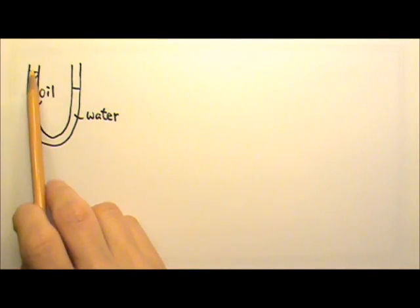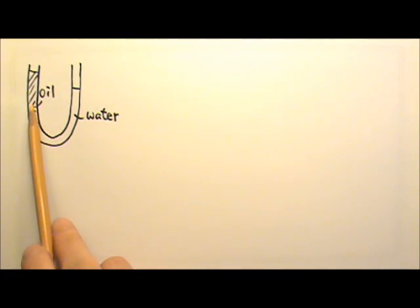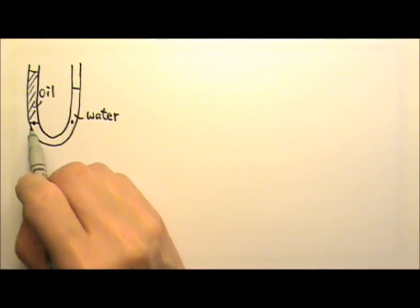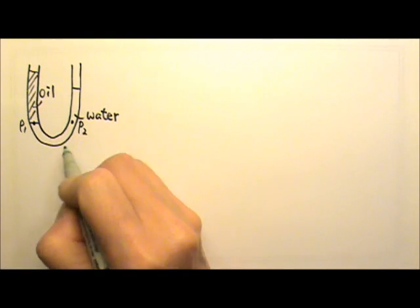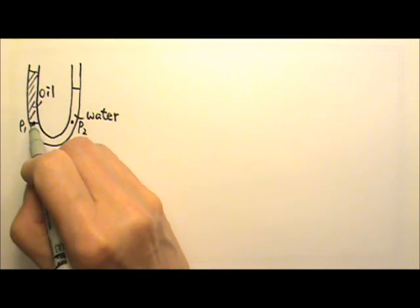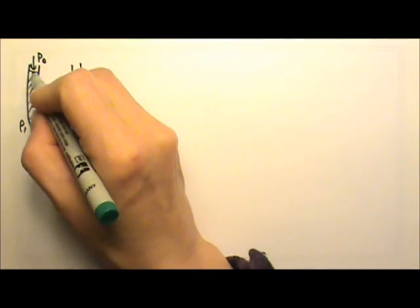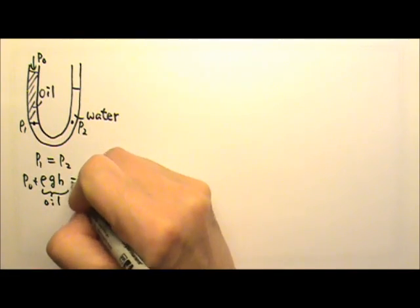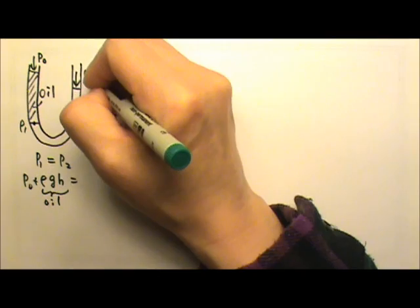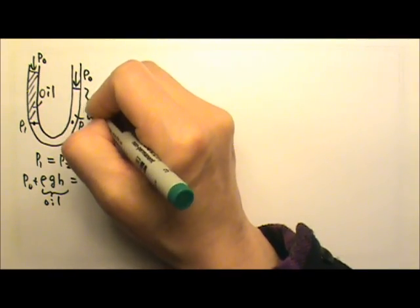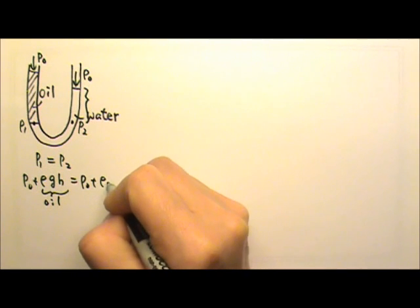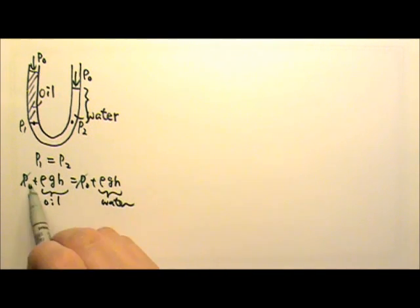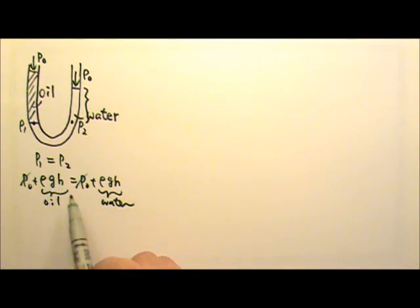We have problems like this with a U-shaped tube filled with water and oil. When it is balanced, the pressure on each side at the same level is equal, so P1 and P2 are equal. The pressure on the oil side is atmospheric pressure plus rho*g*h of the oil, and P2 on the water side is also atmospheric pressure plus rho*g*h of the water. The atmospheric pressure cancels on both sides, so rho*g*h of the oil equals rho*g*h of the water.